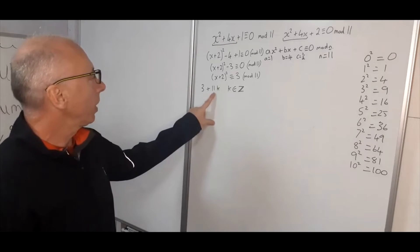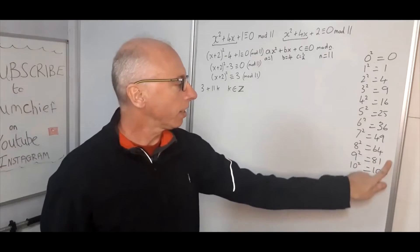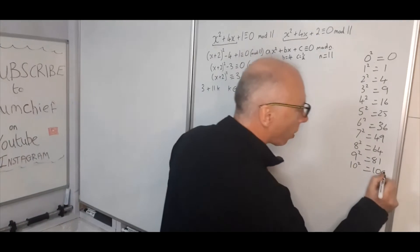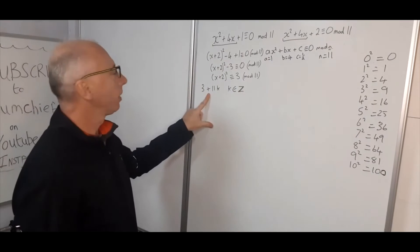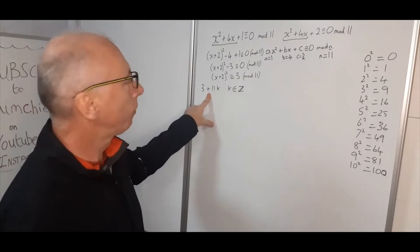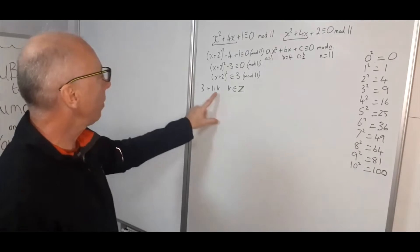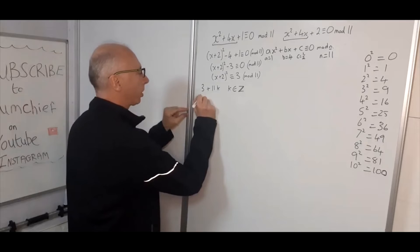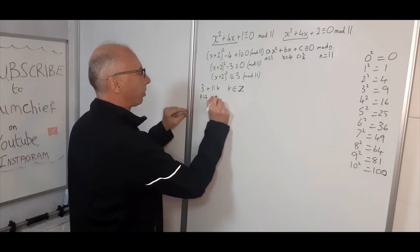So now we want 3 plus 11 times an integer k where we're going to get this number on the right hand side here. So 3, so we get 3, 14, 25. So that's good. So now if k is 2, so for example let's imagine k equals 2, we end up with 25. That leads us to 25.